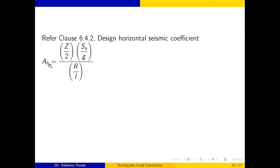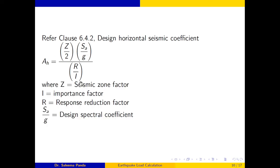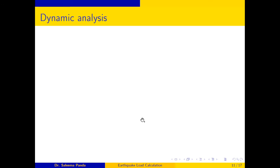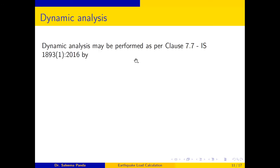In the Response Spectrum Method, Ah is calculated using the formula: Ah = (Z/2) × (Sa/g) / (R/I), where Z is the seismic zone factor, I is the importance factor, R is the response reduction factor, and Sa/g is the design spectral acceleration coefficient.